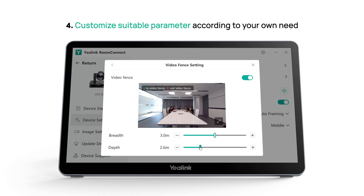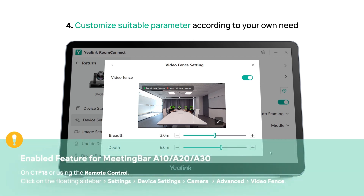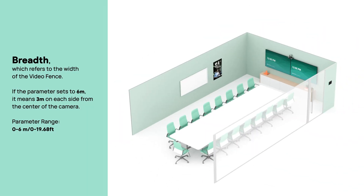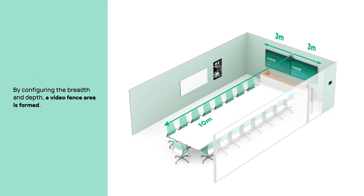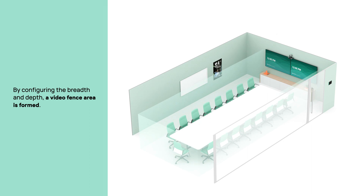Customize suitable parameters according to your own needs. Breadth refers to the width of the video fence — if the parameter is set to 6 meters, it means 3 meters on each side from the center of the camera. Depth refers to the vertical straight-line distance measured from the center of the camera. By configuring the breadth and depth, a video fence area is formed.